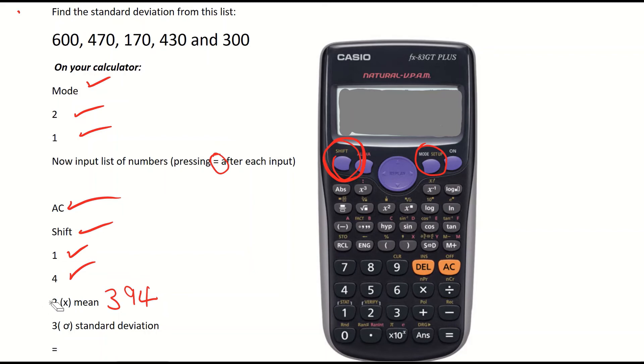Now I follow those instructions once again. I click on the shift key, 1, 4 for variable. And instead of clicking 2 for mean, I'm clicking 3 for standard deviation. So click on 3, hit your equals, and you should get 147.